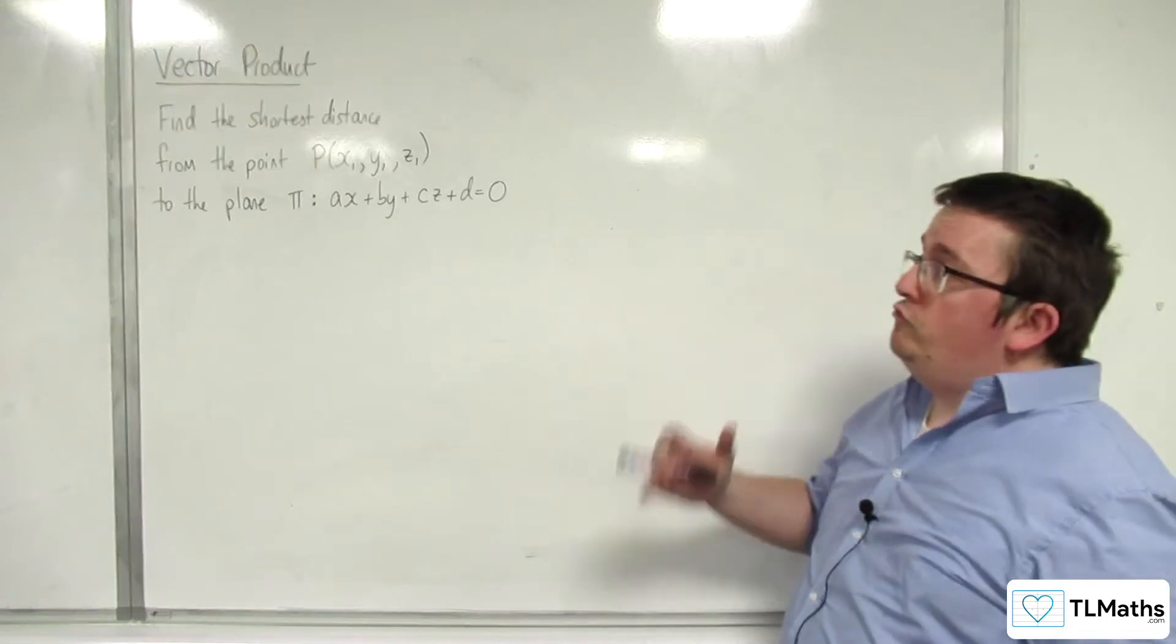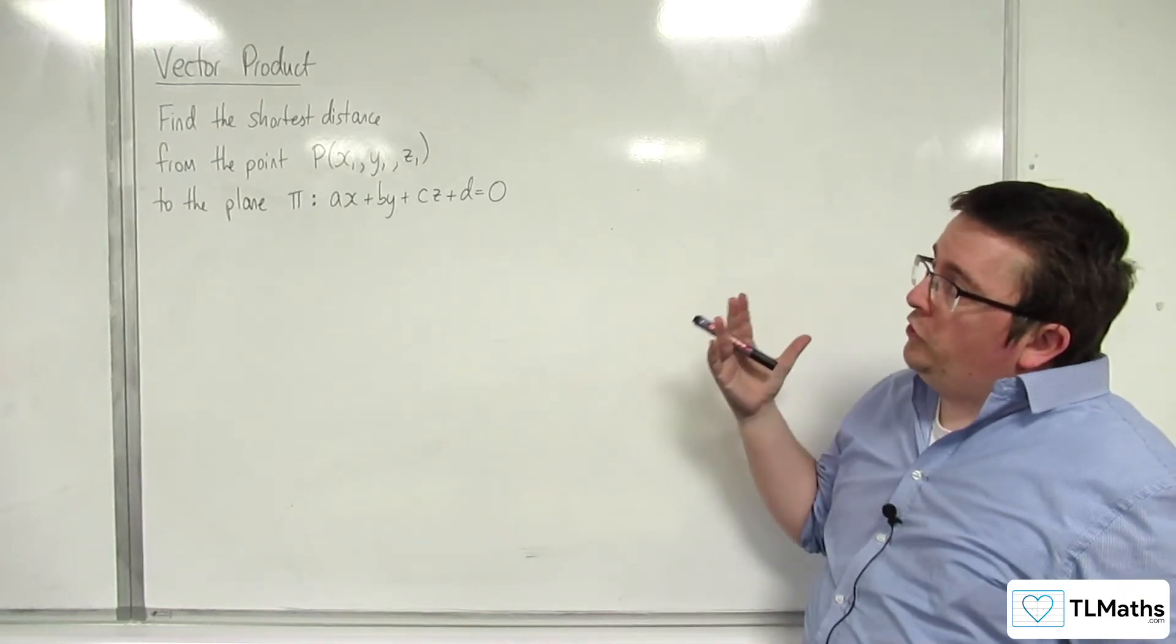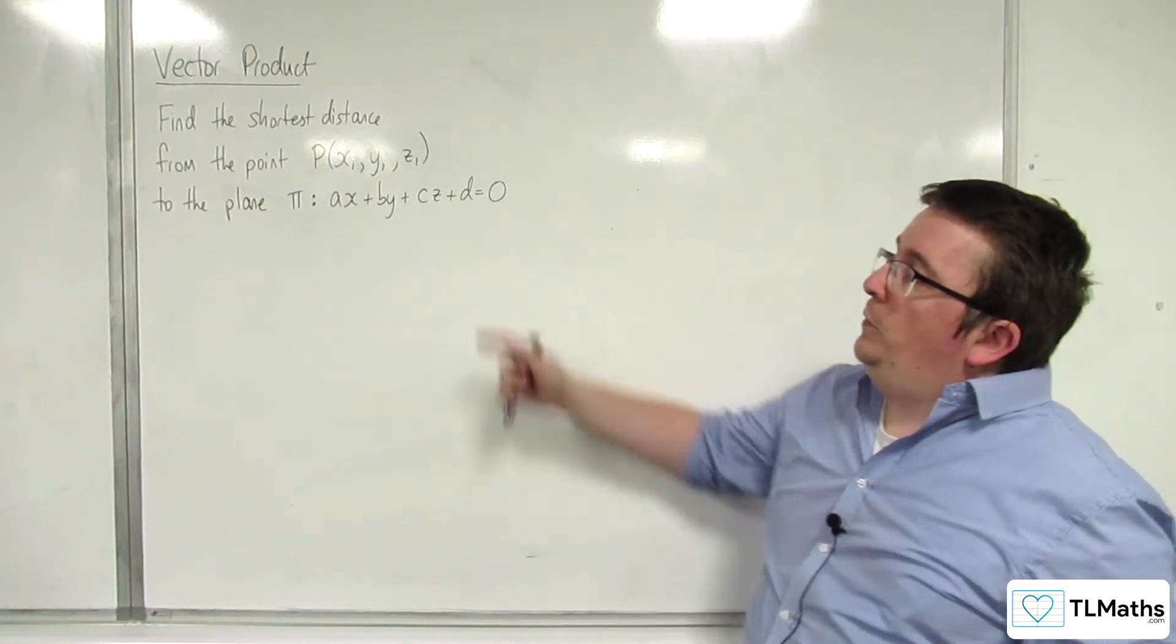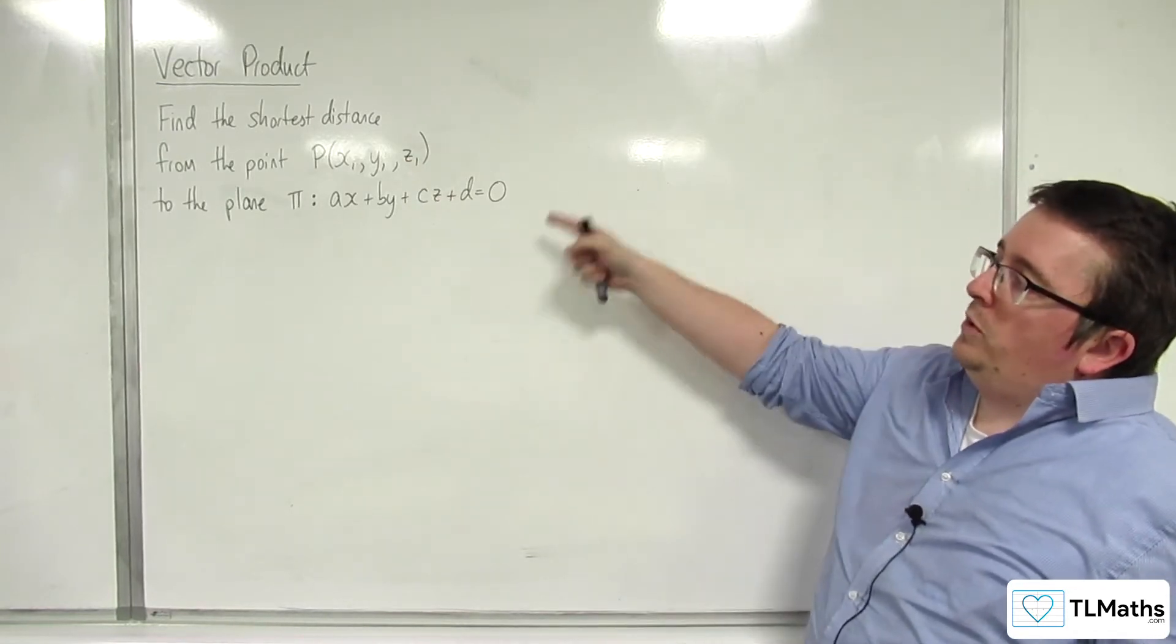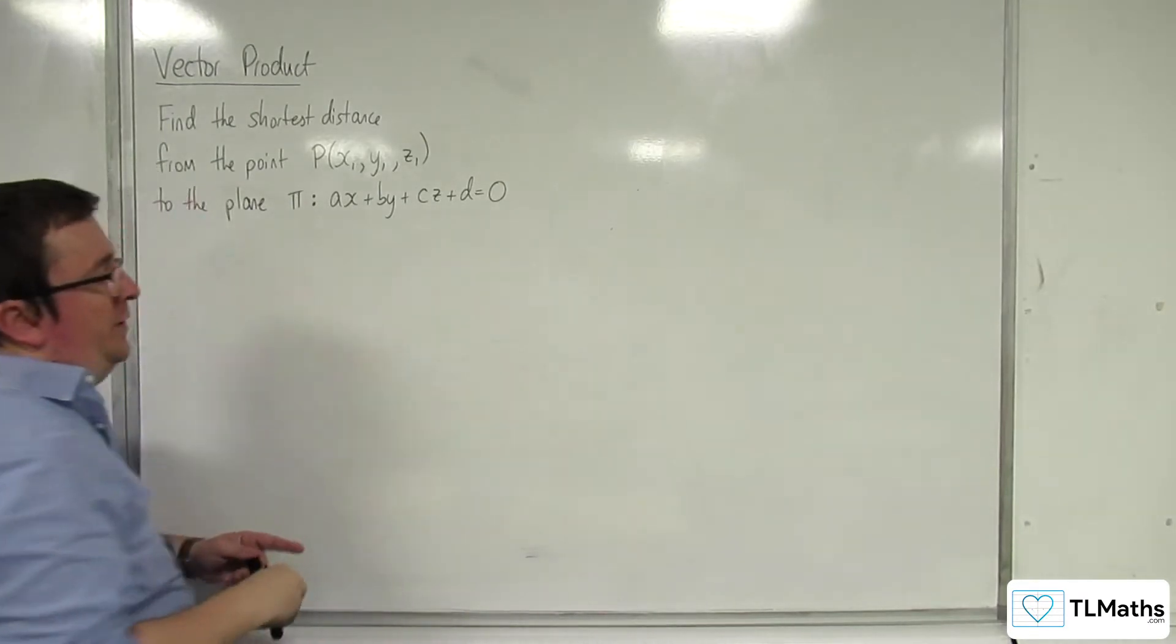In this video we're going to try and derive a formula that will find us the shortest distance from the point P with coordinates x1, y1, z1 to the plane pi with equation ax plus by plus cz plus d equals 0.